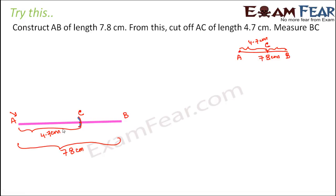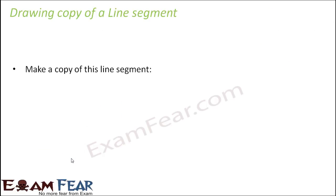Now to measure BC, you place the ruler so that the zero is at point C, and you can easily measure the length of BC. This is left as an exercise for you — do it and verify that the measurement you get on the ruler equals 7.8 minus 4.7 centimeters.